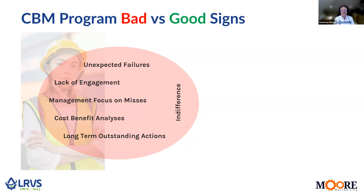So what are the telltale signs if you think your program's going well or not? Obviously, if we're applying condition monitoring and condition-based maintenance, there shouldn't be so many unexpected failures. We don't want to see indifference to the program and lack of engagement — we want stakeholders involved, especially the maintenance department. If our management only become aware of the program because there's been a failure, that's a bad sign. I'm not a big fan of cost-benefit analyses where they're used to justify an ongoing program. When they're being used while the program is operational, it shows people are focused on cost rather than value — there may be a perception they're not getting value from the program.